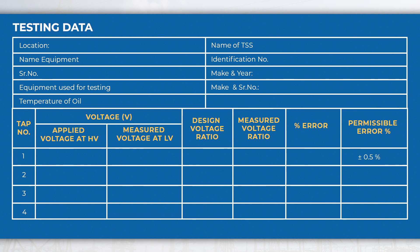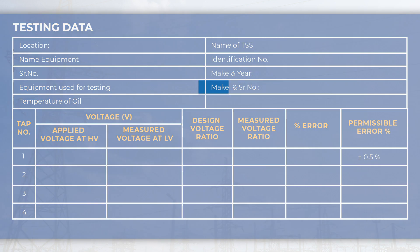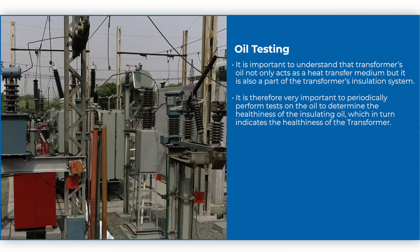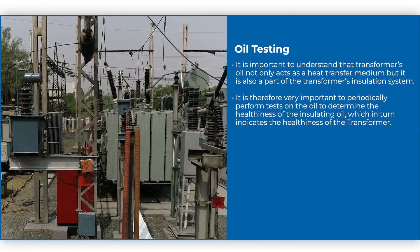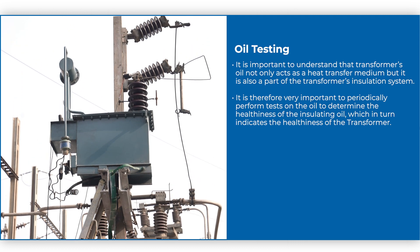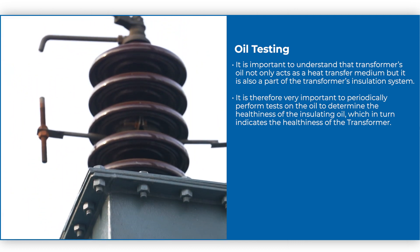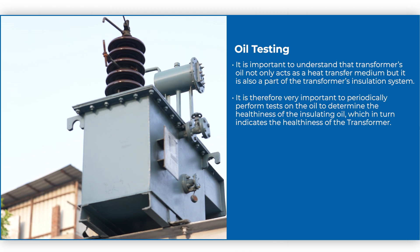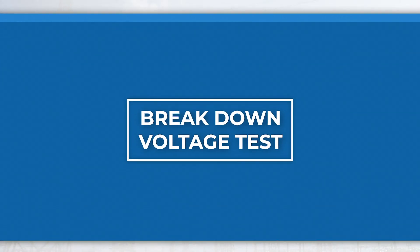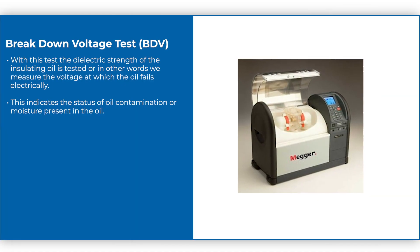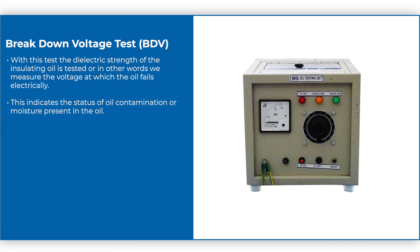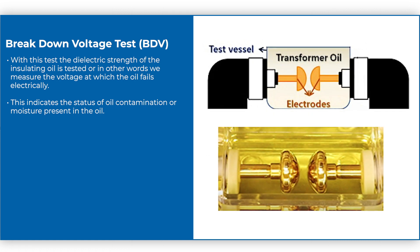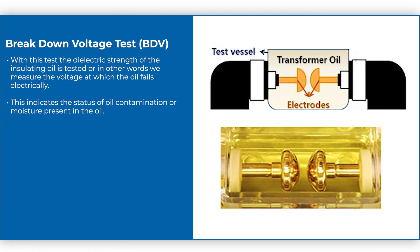Oil testing: It is important to understand that transformer oil not only acts as a heat transfer medium but is also a part of the transformer's insulation system. It is therefore very important to periodically perform tests on the oil to determine the healthiness of the insulating oil, which in turn indicates the healthiness of the transformer. Break down voltage (BDV) test: With this test, the dielectric strength of the insulating oil is tested; in other words, we measure the voltage at which the oil fails electrically. This indicates the status of oil contamination or moisture present in the oil.